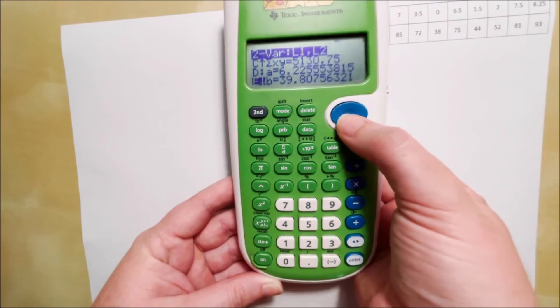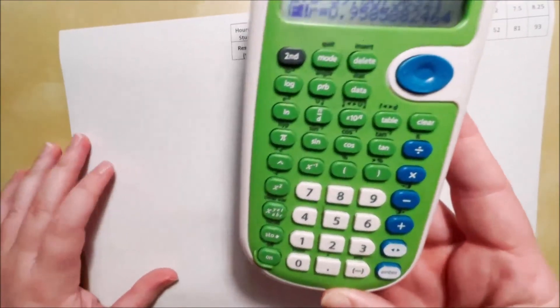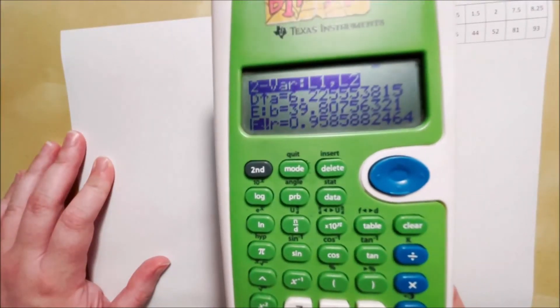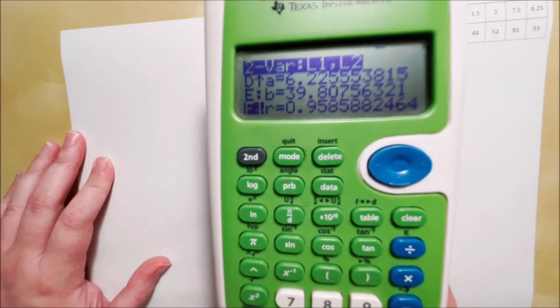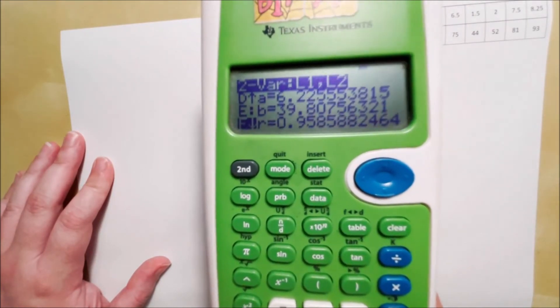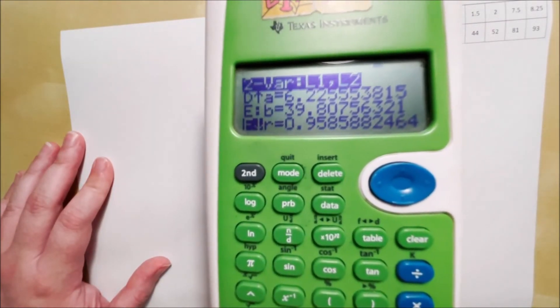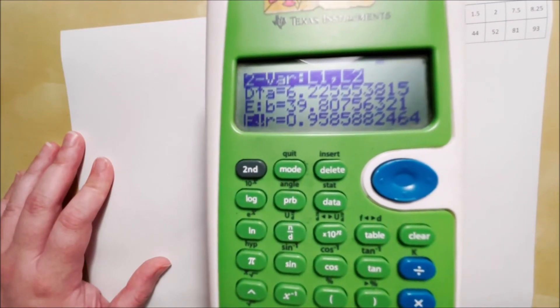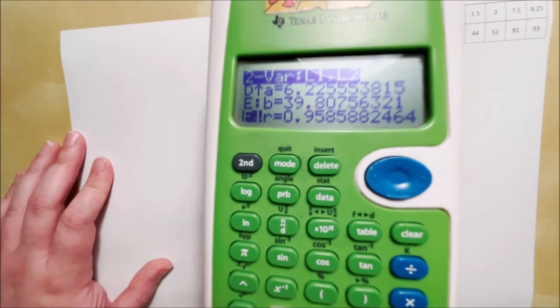And then we get to these three. These are the important ones. Now, if you look at f there, there we go. f says r equals 0.9586, if you round to four decimal places. Okay, that is our correlation coefficient. r equals, r is the symbol for correlation coefficient.